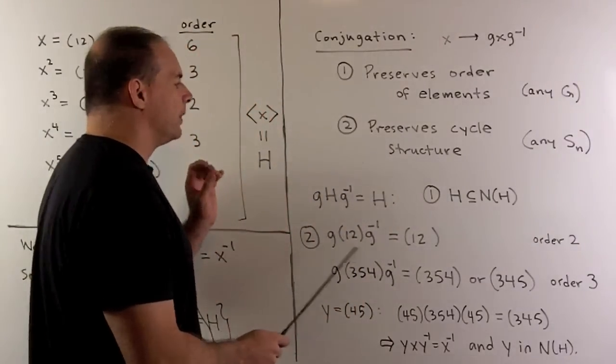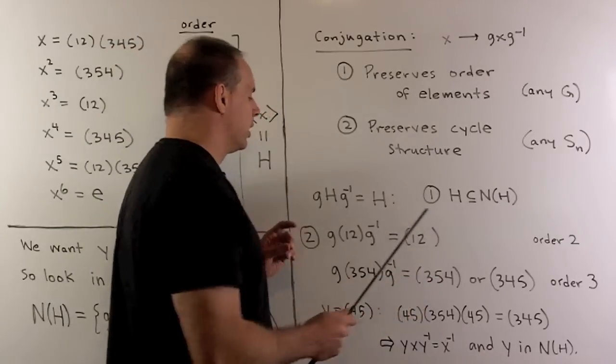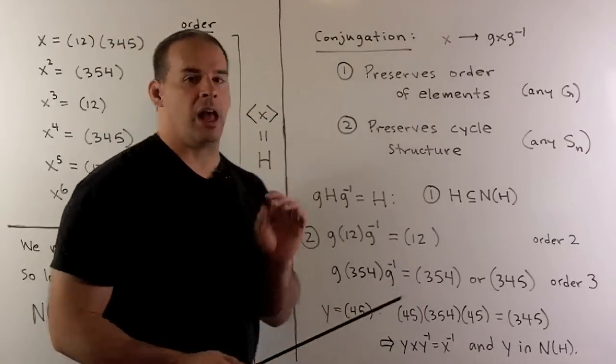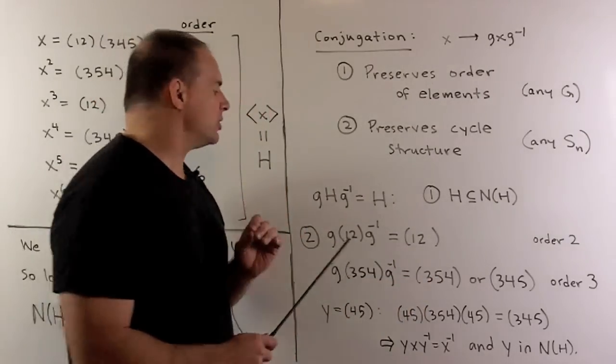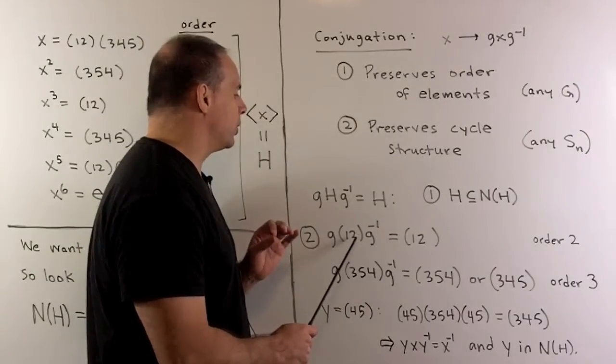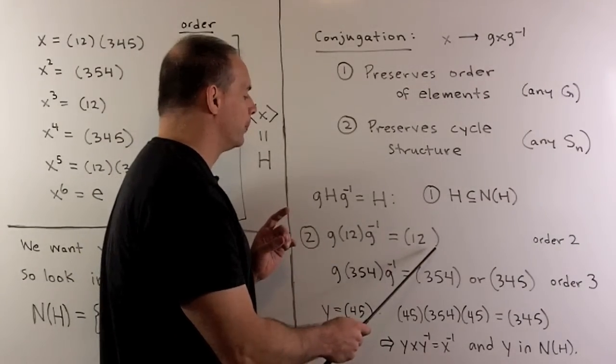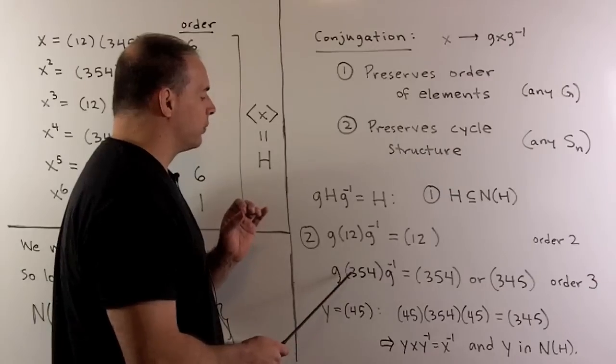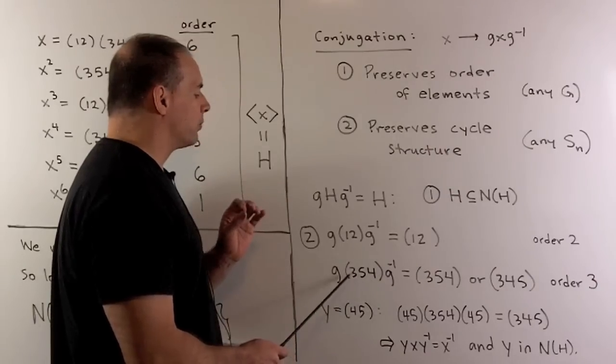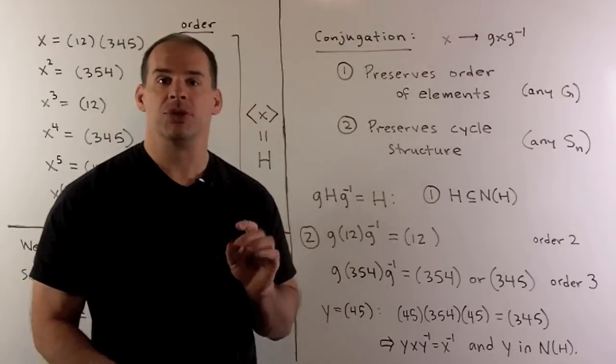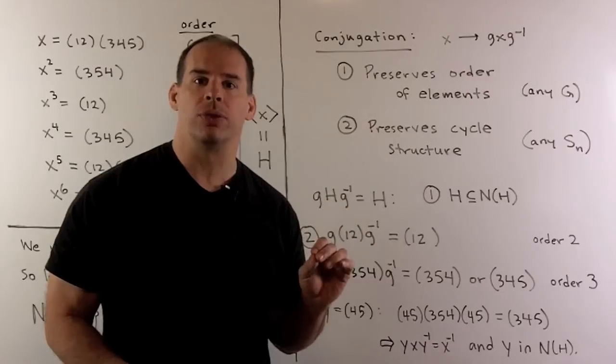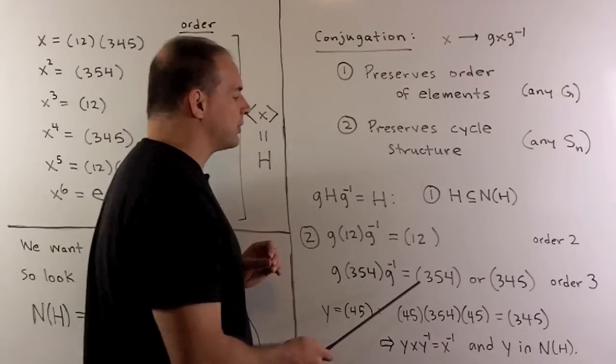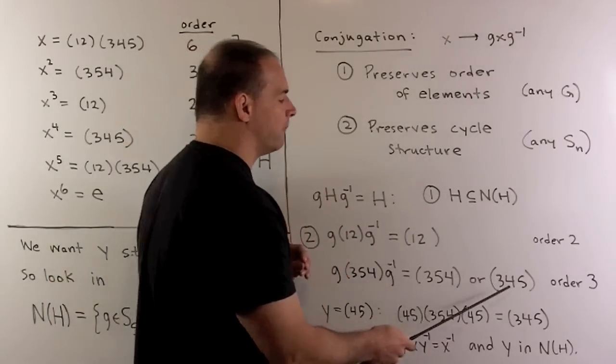Suppose we have G in the normalizer of H. Because (1,2) is a unique element of order 2 in H, that means G is going to have to carry (1,2) back to (1,2). If we consider G conjugating on (3,5,4), well (3,5,4) is an element of order 3, so it has to be carried to another element of order 3, which means it either goes back to (3,5,4) or to (3,4,5).